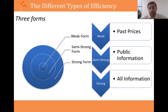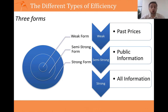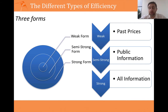Weak form is the easiest type of efficiency and we're only talking about past prices. What if we extend it and say that the price today incorporates not just information in past prices, but also all other publicly available information — accounting statements, news releases, information discussed in the media. All of that is publicly available, and semi-strong form market efficiency says that prices incorporate all of that. Anything that's public is already incorporated into the price.